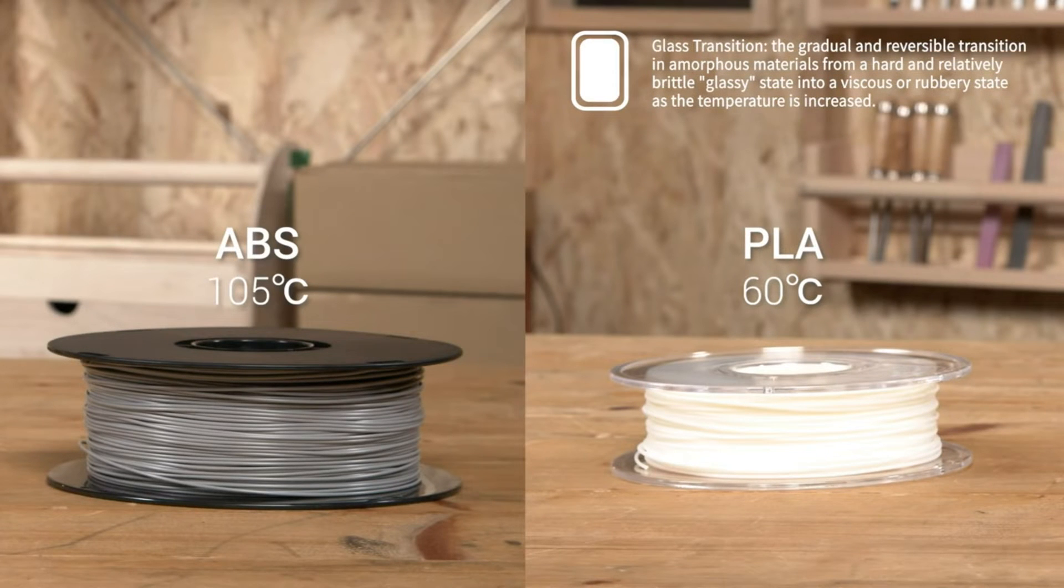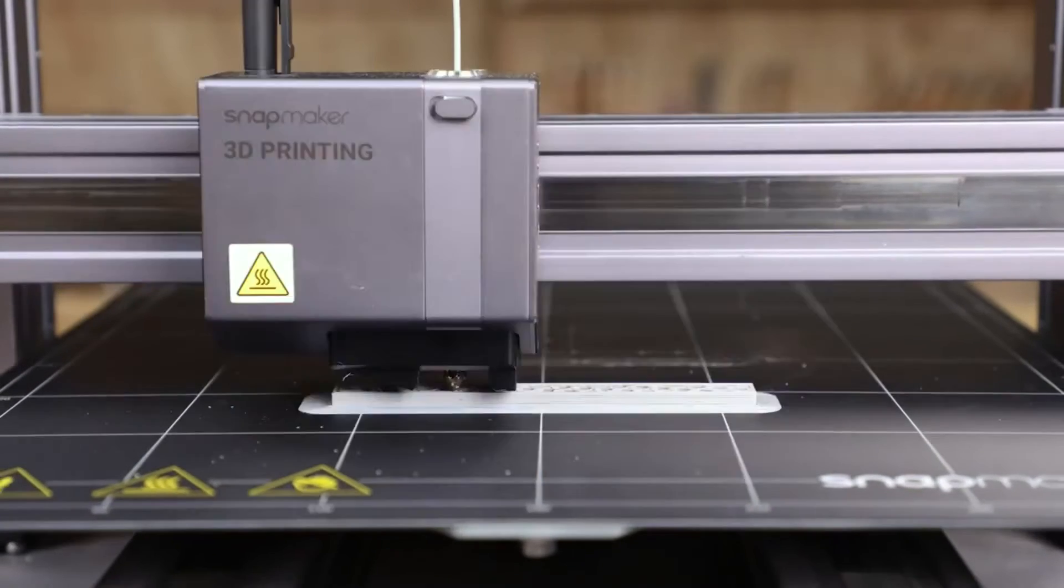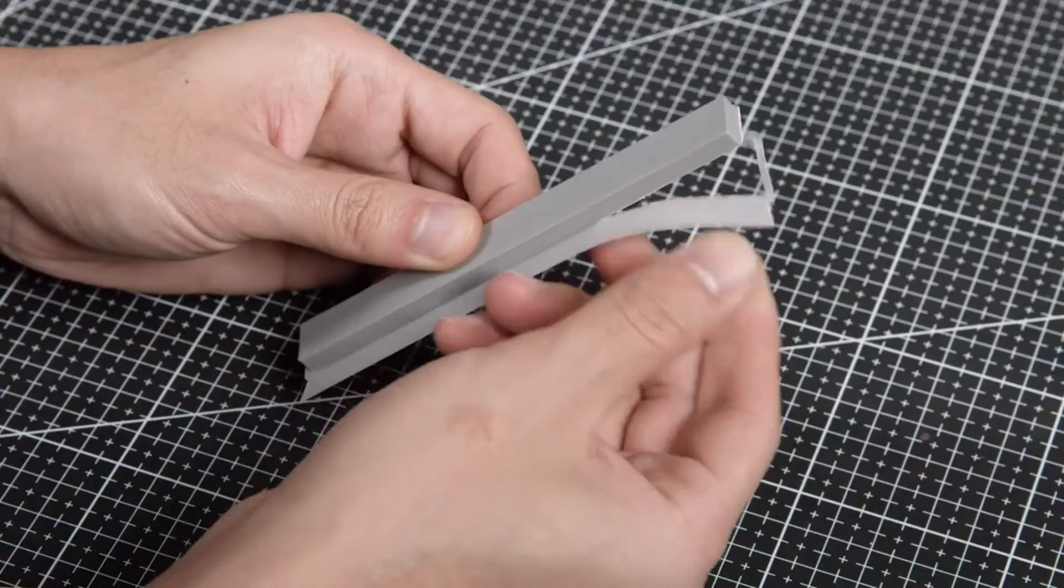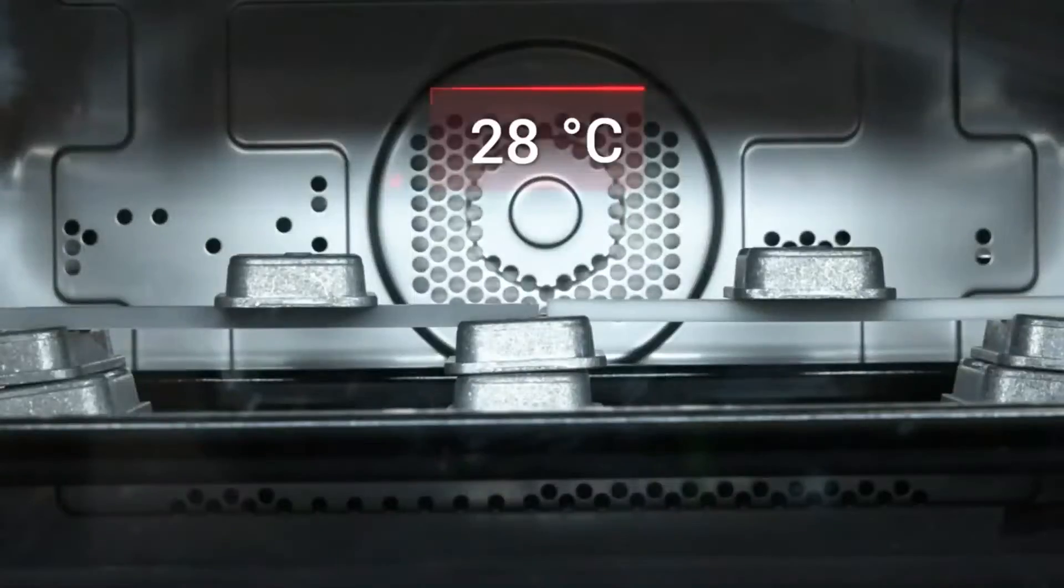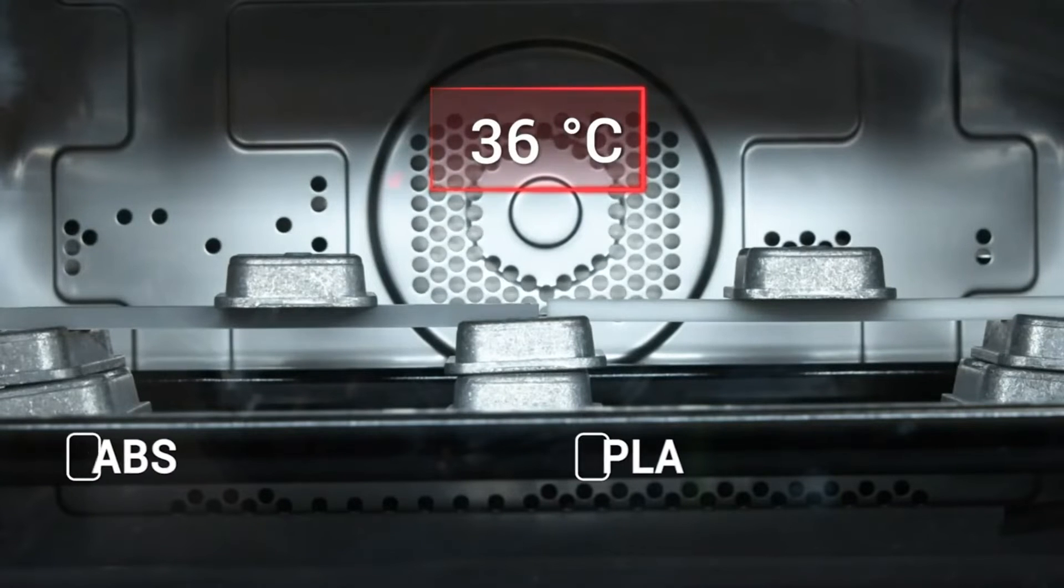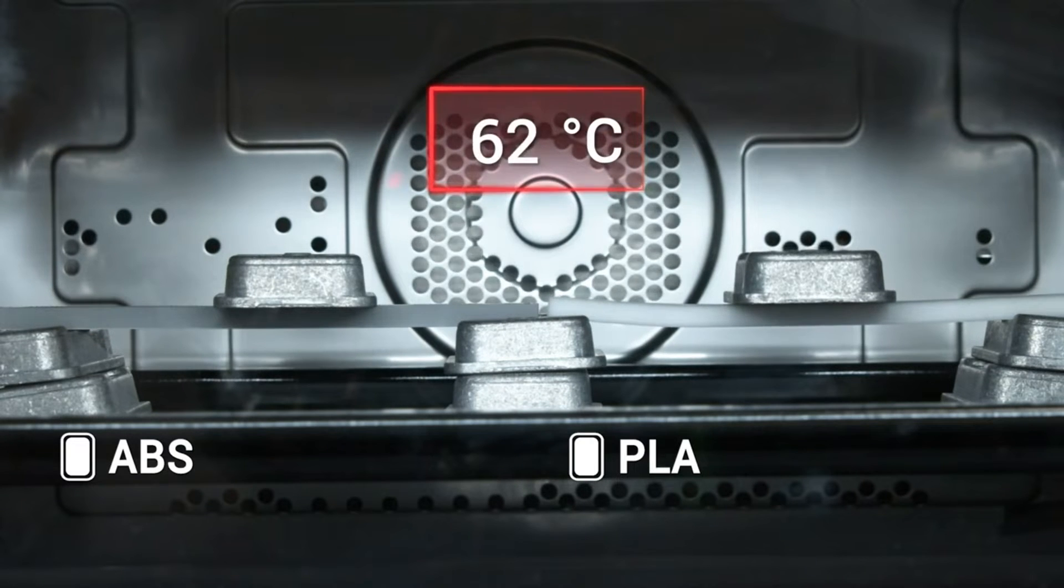It's about 105 degrees Celsius for ABS, while only 60 degrees Celsius for PLA. To demonstrate this, let's print two strips with PLA and ABS, and put them into an oven. Set the temperature at 100 degrees Celsius and see what happens. We can see that PLA softens gradually as the temperature increases, while ABS has no obvious change.